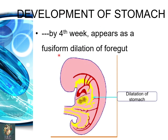The development of the stomach: it initially appears by the fourth week of development as a fusiform dilatation of the foregut, which is the first indication that in this area the stomach will be formed. This is a fusiform dilatation in the area of the foregut.